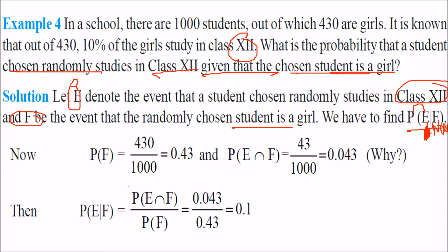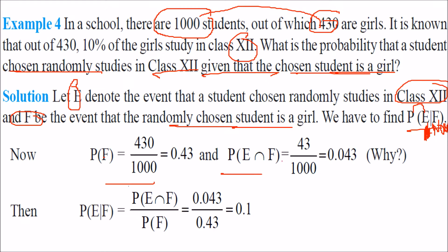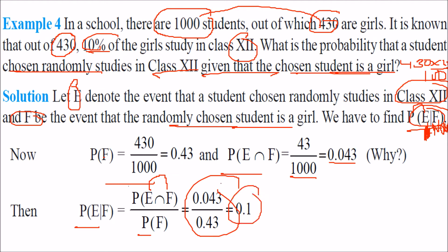Total sample space is 1000. P(F) = 430/1000. P(E∩F) = 10% of 430 = 43, so P(E∩F) = 43/1000 = 0.043. Therefore P(E|F) = P(E∩F) / P(F) = (43/1000) / (430/1000) = 0.1.